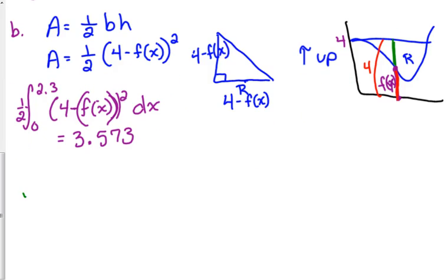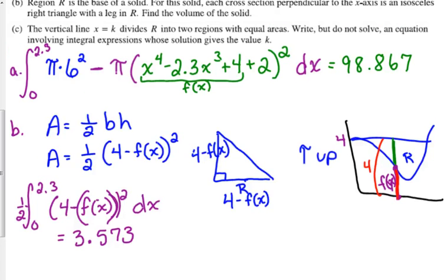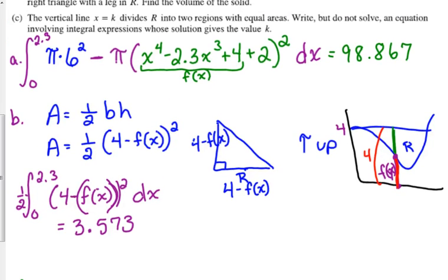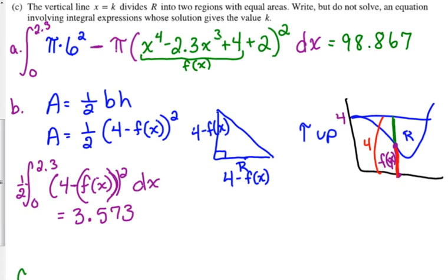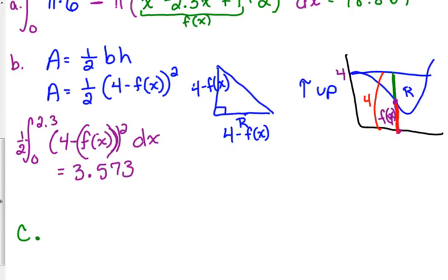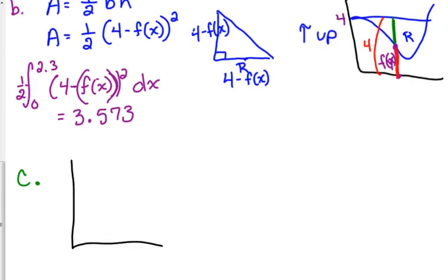Alright. So, we got 2 points left for part C. The last part says: A vertical line, x equals k, divides r into 2 regions with equal areas. Write, but do not solve, an equation involving integral expressions whose solution gives the value k. So, let's draw what it's talking about. I'm just going to resketch my region here. This is region r. And they're saying that there is some vertical line in here at some k that if we draw that in there, area 1 is going to be equal to area 2.